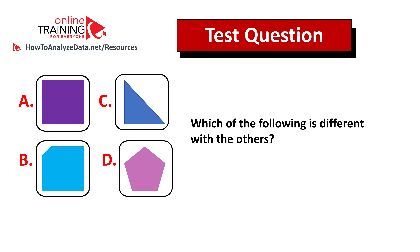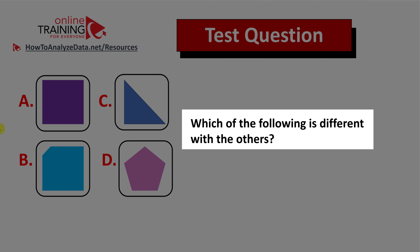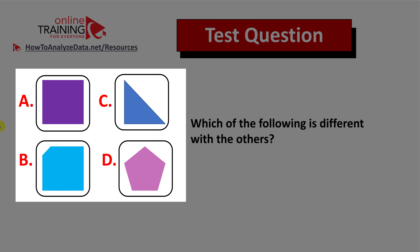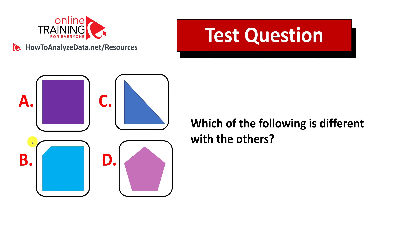Here is a question from the real test you can try to solve on your own. Which of the following is different from the others? You're presented with four different shapes: A — square, B — different square, C — triangle, D — pentagon. Give yourself 10 to 15 seconds to see if you can solve this challenge. If you figured out the answer, please post it in the comment section including your rationale so I can give you feedback. Thanks for participating and good luck.